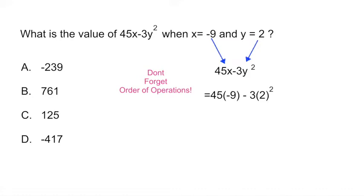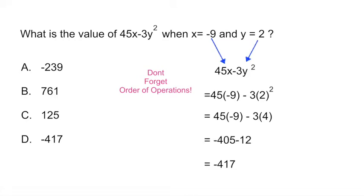Remember that you do things in parentheses first, followed by exponents, multiplication, division, addition, and subtraction. Here the first thing we solve is the exponent: 2 squared equals 4. So we end up with 45 times negative 9 minus 3 times 4, which gives us negative 405 minus 12, for a total of negative 417.